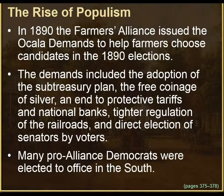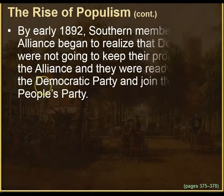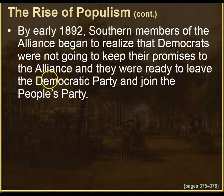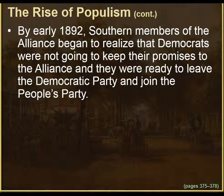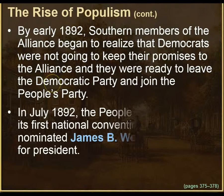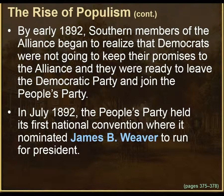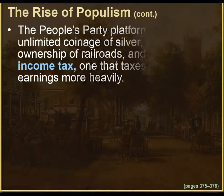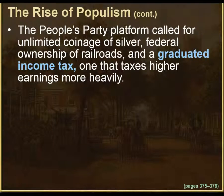Many pro-Alliance Democrats were elected to office in the South. By early 1892, Southern members of the Alliance began to realize that Democrats were not going to keep their promises, and they were ready to join the People's Party. In July 1892, the People's Party held its first national convention, nominating James B. Weaver for president. The platform called for unlimited coinage of silver, federal ownership of railroads, and a graduated income tax — one that taxes higher earnings more heavily.